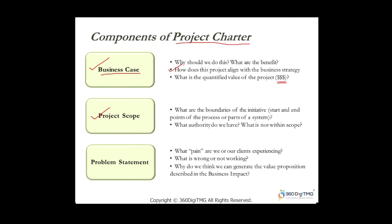Without a defined scope, today you're improving the finance department; tomorrow another stakeholder steps in and says the project will impact their department too, so can you include them; then another senior leader asks you to include their team. But if you have a clear scope defined, you can say the scope is set and you'll do another project later. Scope defines boundaries and what authority you have on the project.